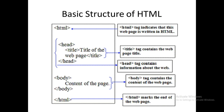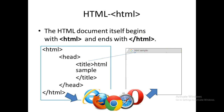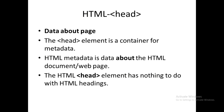The head tag consists of information about the web page, and the body tag consists of information which is displayed on the web page. The HTML document starts with the HTML tag and ends with slash HTML. Head starts with head and ends with slash head. Body starts with body and ends with slash body. The head tag tells you data about the web page — it is the container for metadata. Metadata is the data about data; it may include the title of our web page.